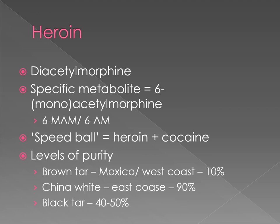Heroin itself is called diacetylmorphine and breaks down to a specific metabolite called 6-monoacetylmorphine, abbreviated as 6-MAM or 6-AM. People combine heroin with cocaine — called a speedball — because they want the depressant effects of the heroin and morphine as well as the upper effects of cocaine, which combat each other and give a better high. Depending upon where you get the heroin, it has different names and different amounts of purity.